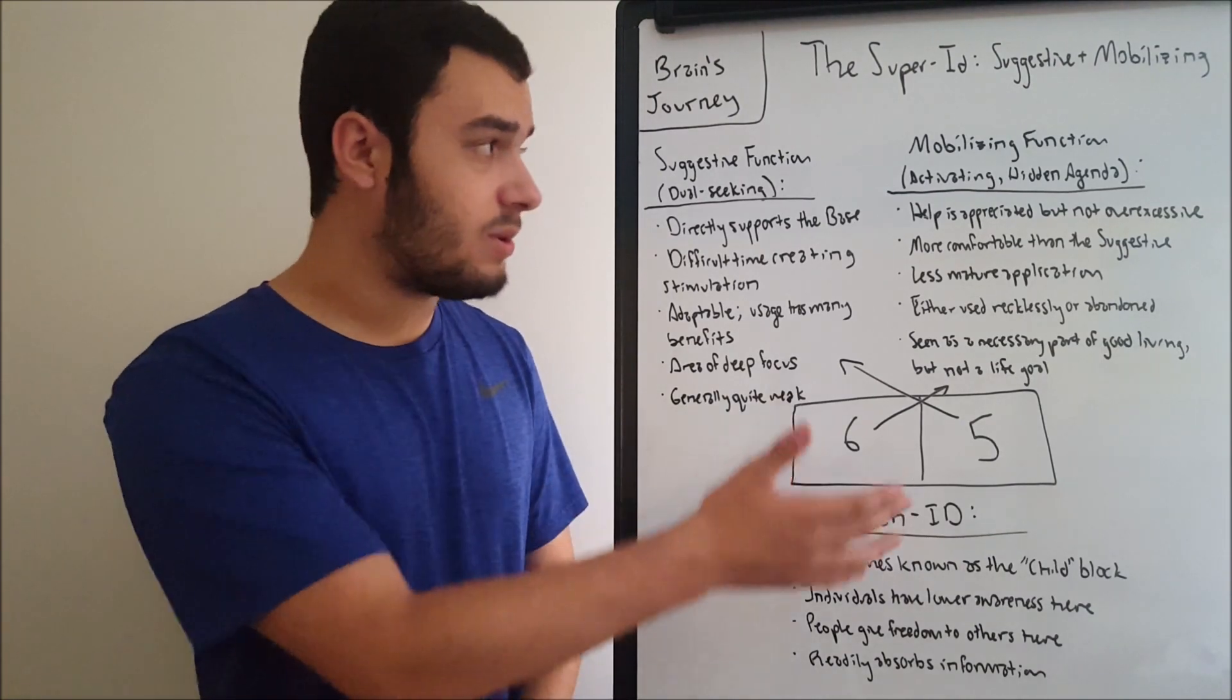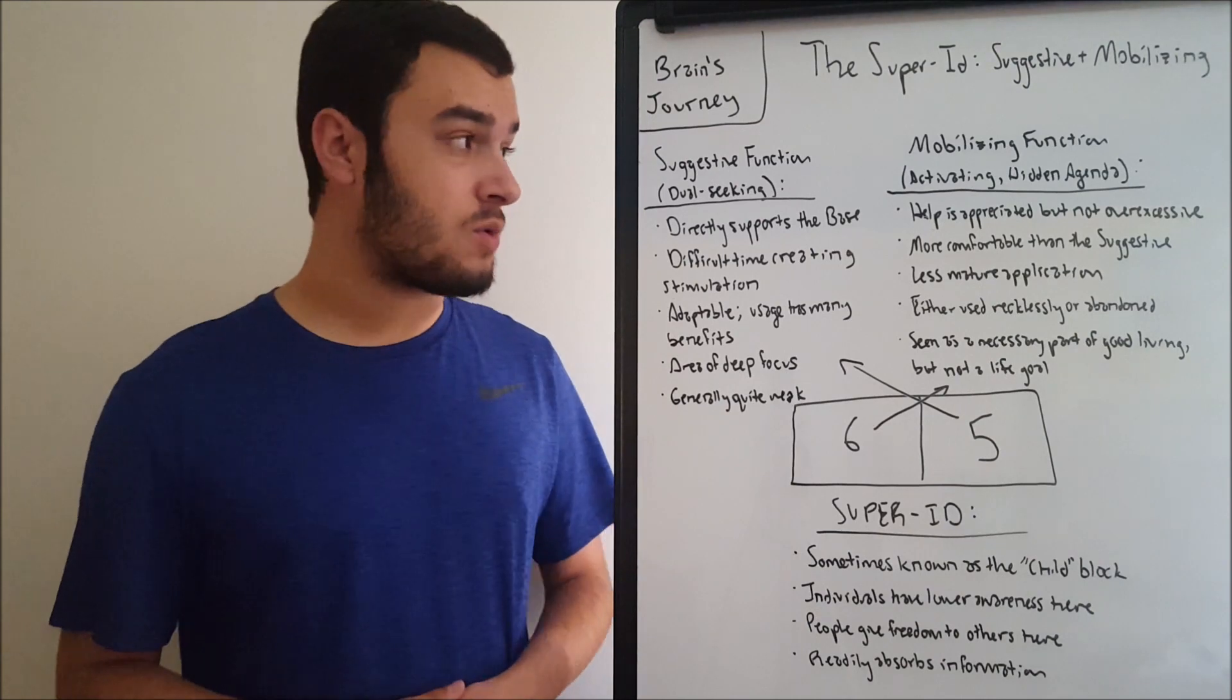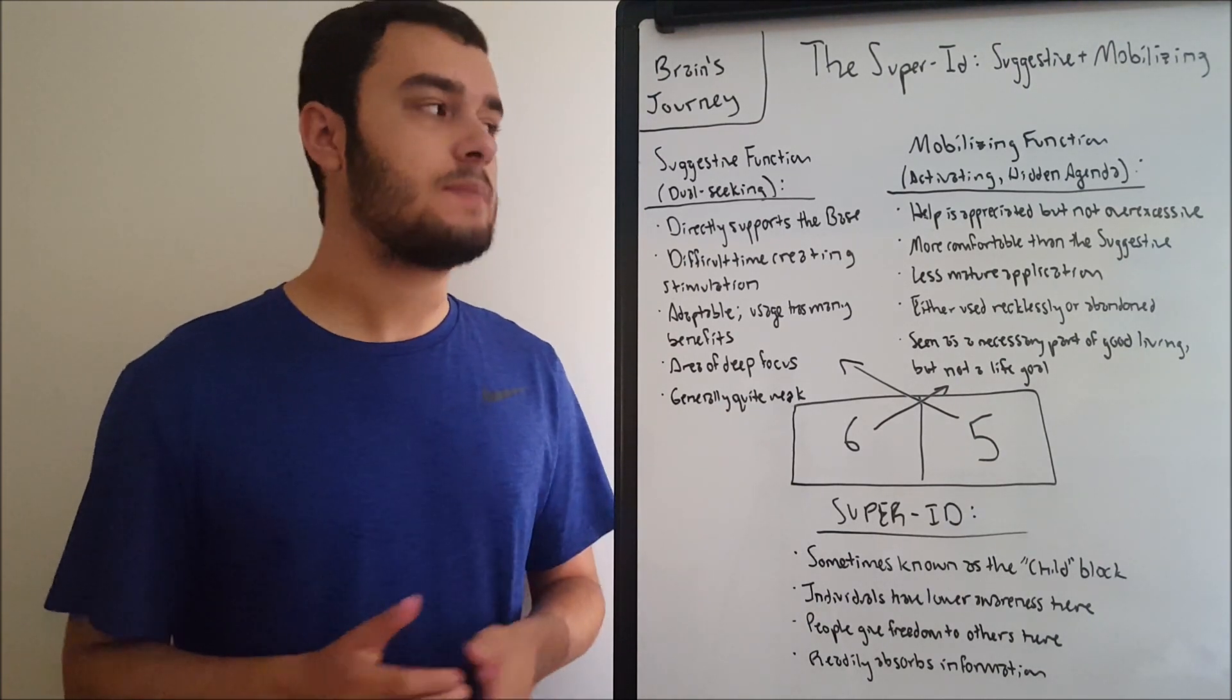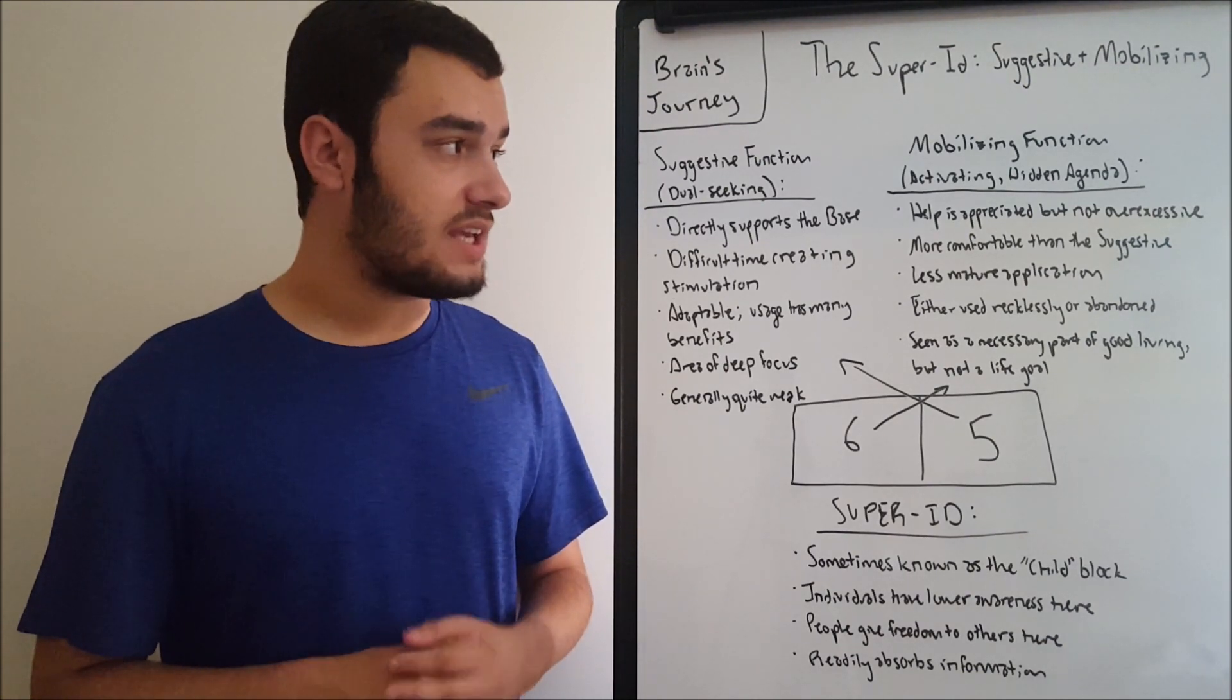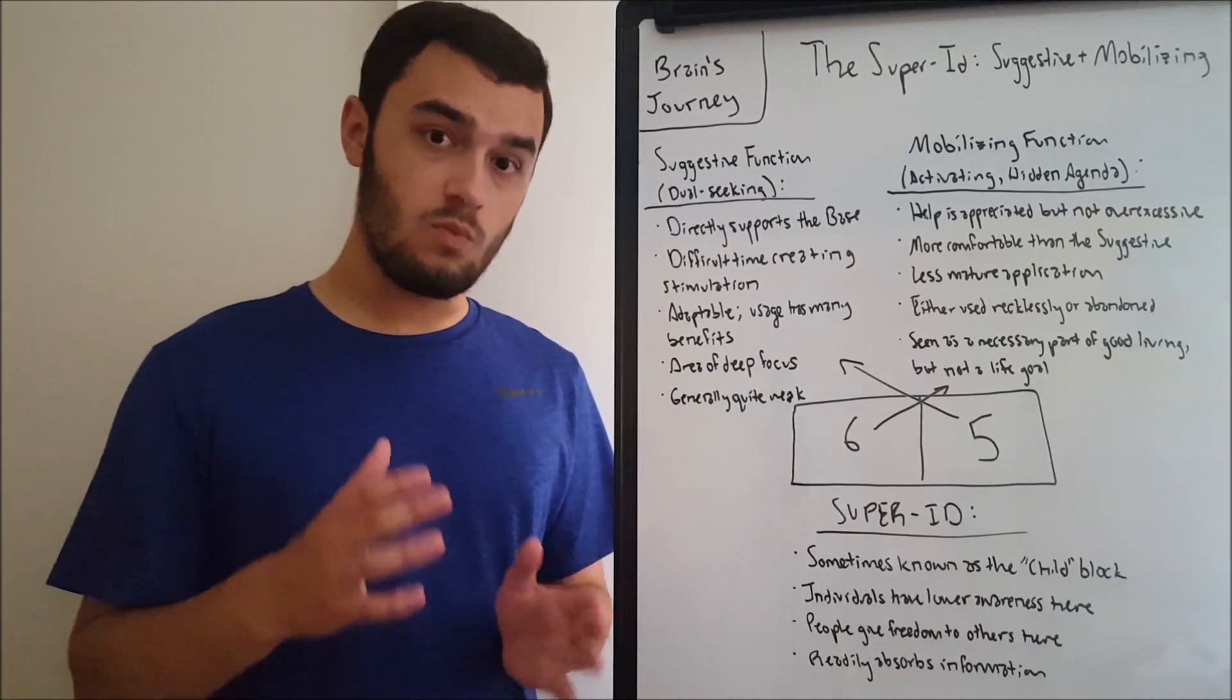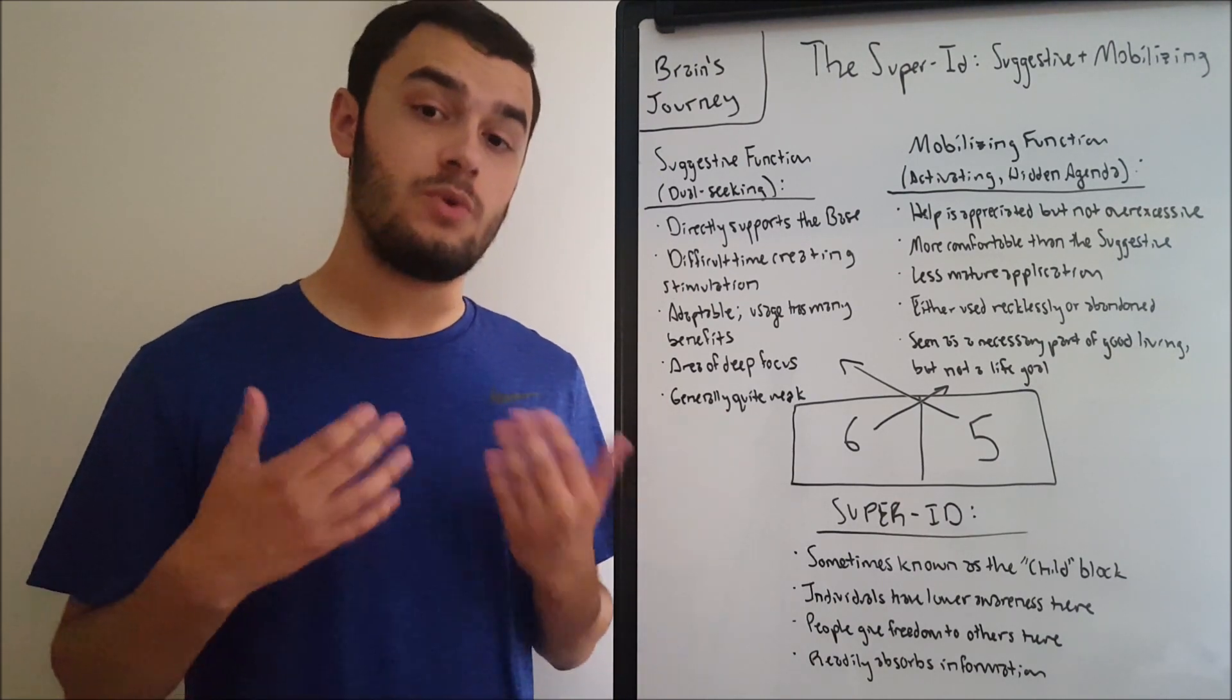Moving on to the sixth function, the mobilizing, you may also see the mobilizing called the activating function or the hidden agenda. The hidden agenda is kind of a dicey concept and I may touch on it after we finish our Model A series, but for the most part, the hidden agenda stuff is speculative. But that being said, the mobilizing is a function that we also enjoy help in.